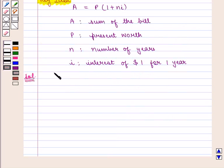We know that here A is equal to thrice of P, and the number of years N is given as 10, and we need to find the value of I.